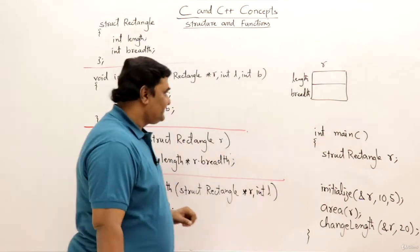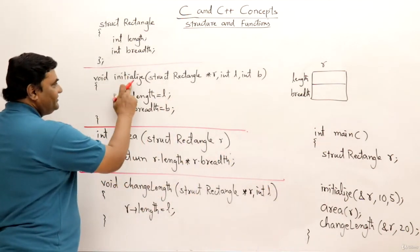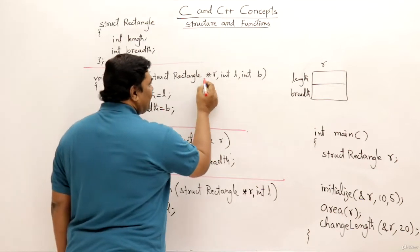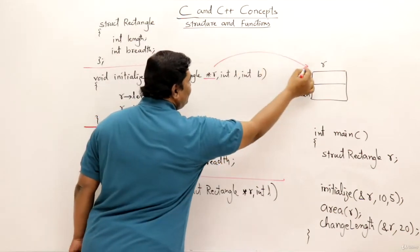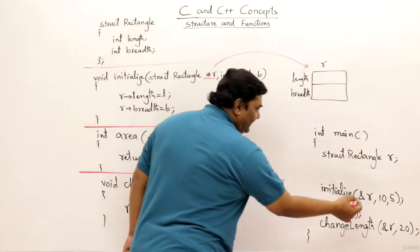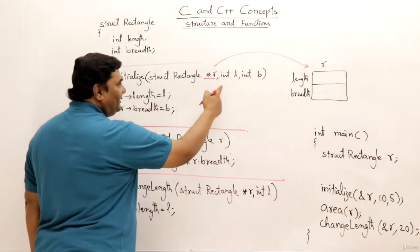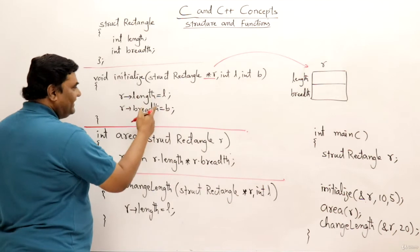So let us look at these functions. This is the first function initialize which is taking an address variable r. So this r will be a pointer to this rectangle as we are sending address here. Now using the pointer it will fill up length and breadth.